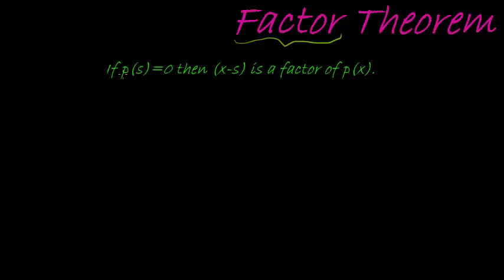Now, what this one says is that if we take a polynomial and we substitute any number, and if by substituting that number it simplifies to zero, then x minus that number will be a factor of the original polynomial.